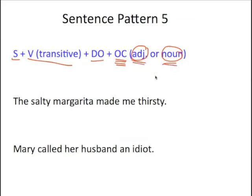We have two Pattern Five examples — one with an adjective objective complement and one with a noun objective complement. First: 'The salty margarita made me thirsty.' Second: 'Mary called her husband an idiot.'